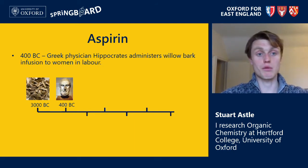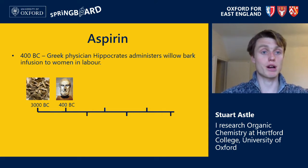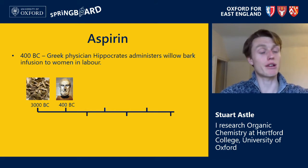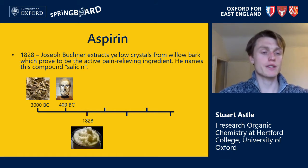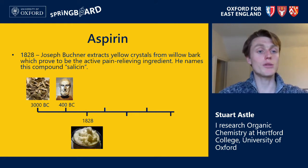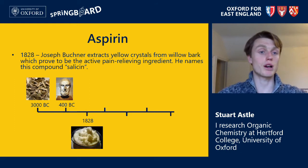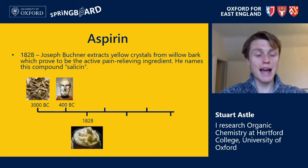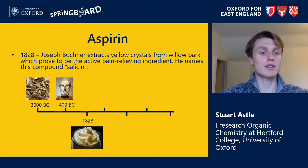It wasn't just the Egyptians who knew of this magical pain-relieving property. The Greek physician Hippocrates was also known to have administered willow bark infusions to women in labour to combat the pain of childbirth. He also didn't know how willow bark had this effect — he just knew it worked. Fast forward to 1828, when a German chemist called Joseph Buchner was able to extract yellow crystals from willow bark which proved to be the active pain-relieving ingredient. He named this compound salicin.